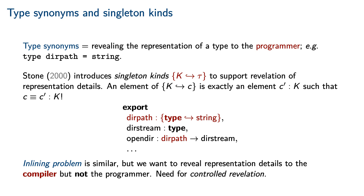Stone in 2000 introduced singleton kinds to support exactly this revelation of representation details. Given a kind k and an element c of k, the singleton kind k maps to c is the type of elements of k that are equal to c. For example, we could export a constant dirpath of singleton kind type maps to string. This has the effect of exporting a new type, dirpath, that is equal to string — in other words, dirpath and string are interchangeable in this context.